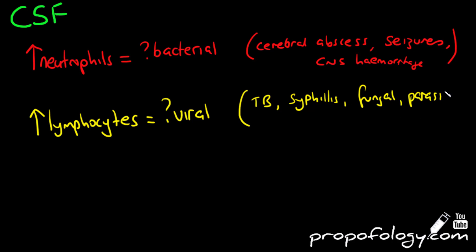If you have an increased lymphocyte count, this can indicate viral meningitis. Lymphocyte counts are also elevated in meningitis due to TB, syphilis (which would be tertiary syphilis if it was present in the brain), and fungal and parasitic infections. Degenerative diseases of the CNS such as multiple sclerosis can also generate elevated lymphocyte counts.